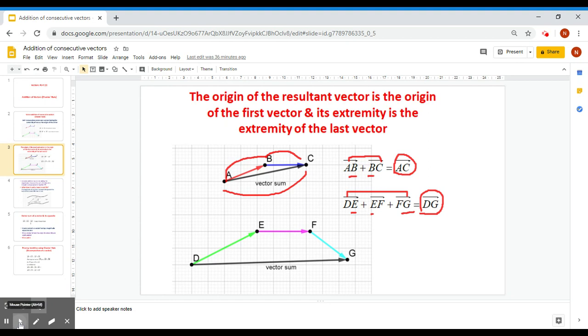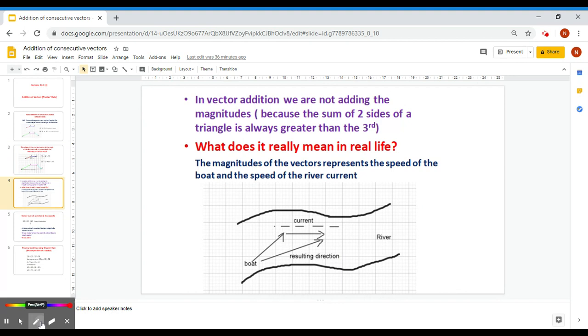To illustrate better, here is an example from real life. If this is a river, and there is a boat going up the river in this direction, and the current of the river is pulling in this direction.